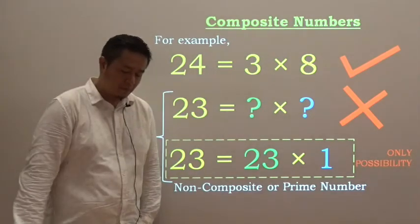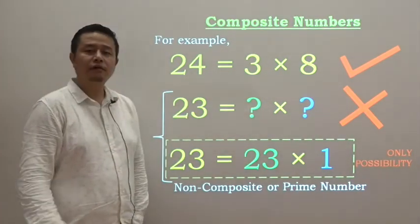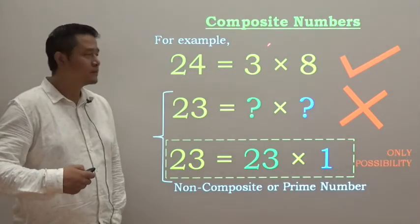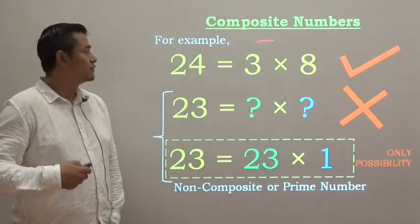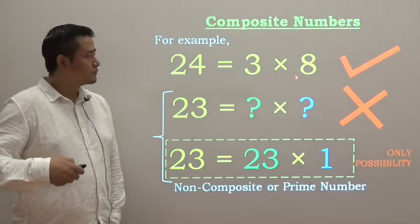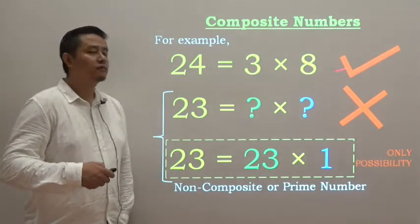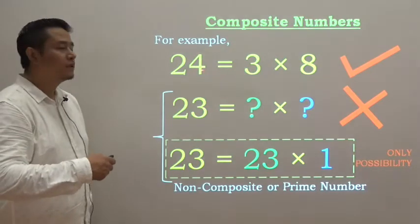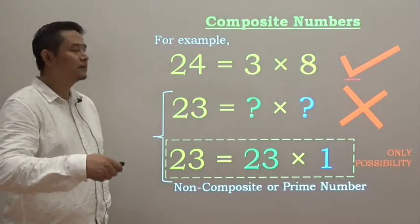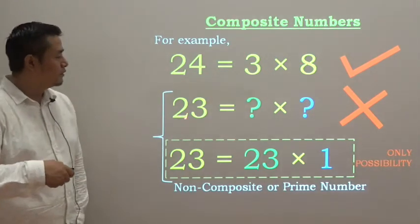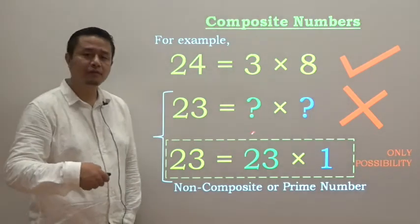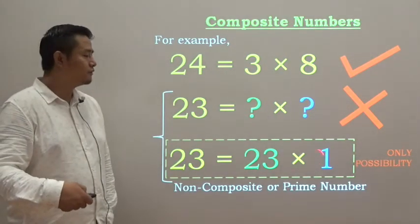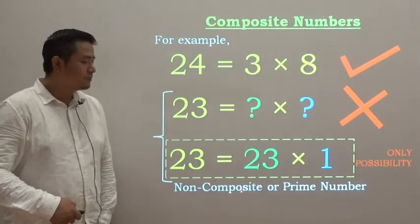Among natural numbers there are certain class of numbers called composite numbers. For example, 24 can be written as 3 times 8. Any number which can be factorized is called a composite number. But 23, we cannot think about any number that multiplied out to 23 except 23 into 1. These are called non-composite or prime numbers.